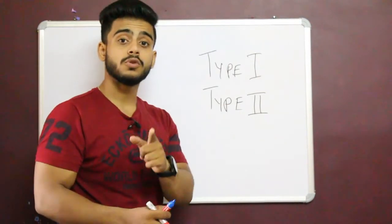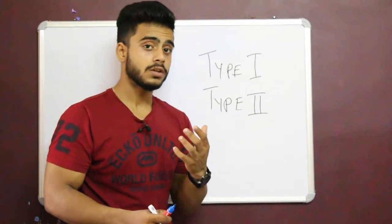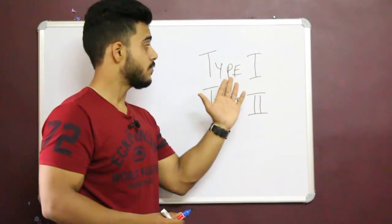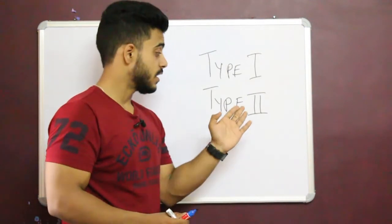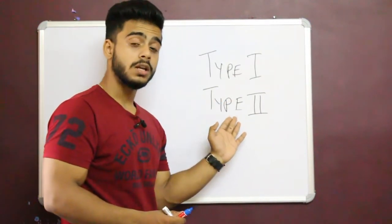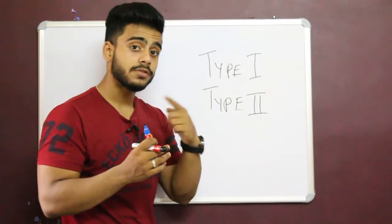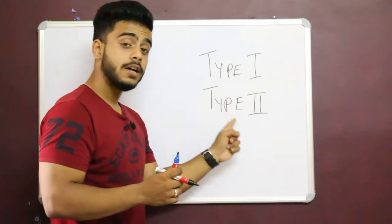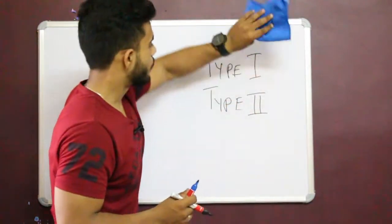For Type 1 diabetes, you have to live a healthy lifestyle, doesn't matter if you take insulin or not. If you don't give up your love for food and become dependent on insulin, down the line your life span will decrease, your kidney will damage, your healing process will slow down, you'll have hair fall, your eyesight will weaken, and chances of cataracts will increase.